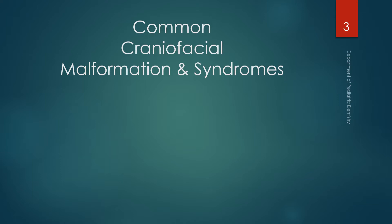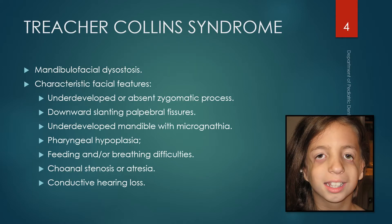Let's begin with the first part of the presentation on common craniofacial malformations and syndromes. The first one is Treacher-Collins syndrome, also called mandibulofacial dysostosis. Its characteristic features are facial in nature. The first is underdeveloped or absent zygomatic process, or the malar process of the cheek. You can see this depression on the picture — this is very characteristic of patients who have Treacher-Collins syndrome.